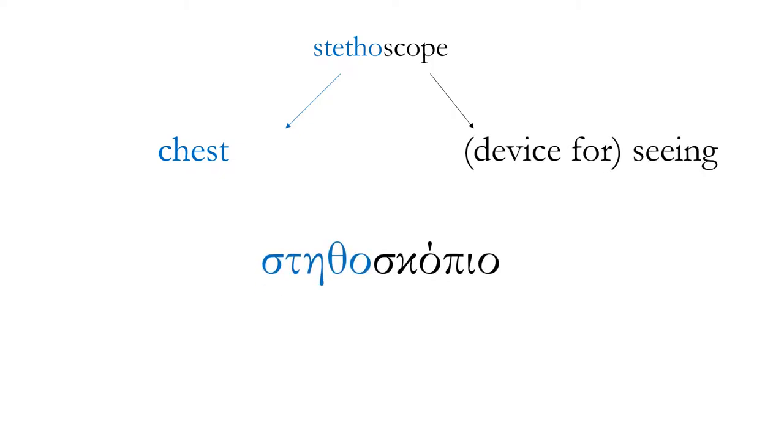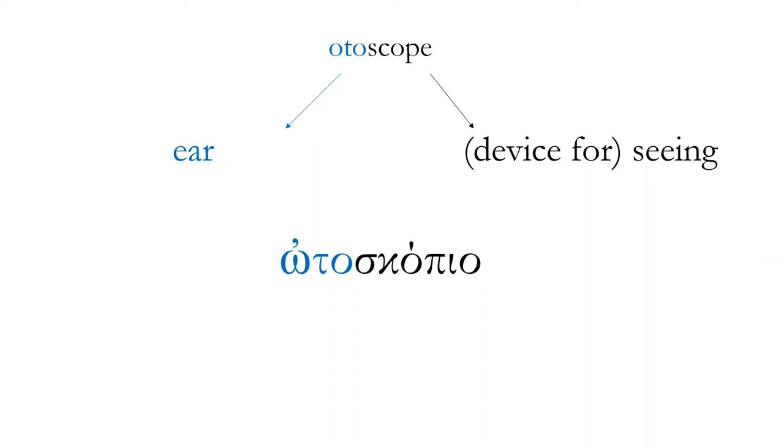A stethoscope: a stethos is a chest, so a stethoscopio is a device that helps us see the chest. An otoscope: otto is the Greek word for ear, the old word for ear. So an otoscopio is a device that we've all seen before at the doctor's office, something that a doctor uses to look into the ear.